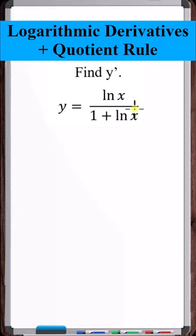Okay, let's find y prime. To do this, we'll need to use the quotient rule, as well as the technique for taking derivatives of logarithmic functions, in this case, the natural logarithm.